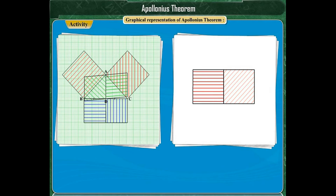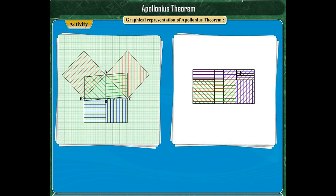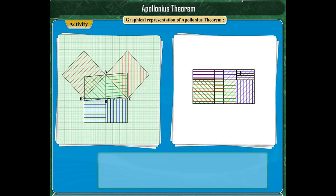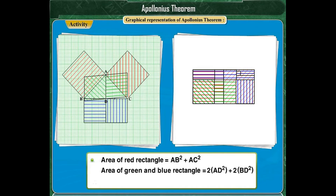Cut both the red squares and join them to get a red rectangle. In the same way, cut the green squares and join them, and cut the blue squares and join them to get green and blue rectangles. Now, place the green and the blue rectangle on the red rectangle. We find that the red rectangle exactly matches with the green and blue rectangles. As the area of the red rectangle is AB squared plus AC squared, and that of the green and blue rectangles together is 2AD squared plus 2BD squared, we can conclude that AB squared plus AC squared is equal to 2AD squared plus 2BD squared.